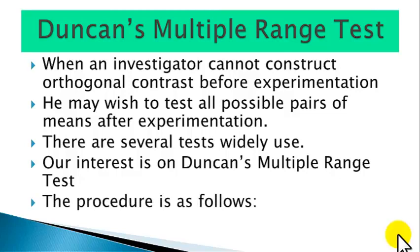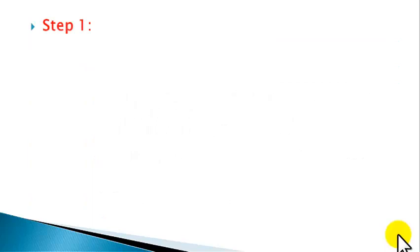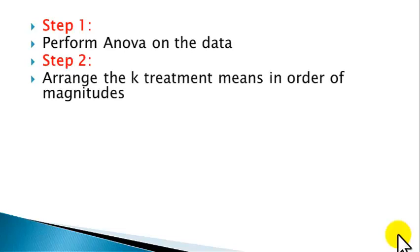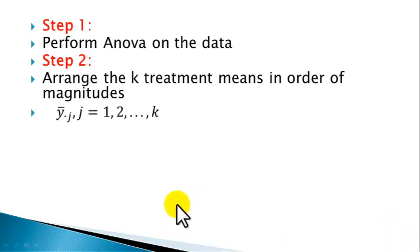The procedure is as follows. Step 1: Perform ANOVA on the data. Step 2: Arrange the treatment means in order of magnitude — that is, y-bar dot j for j equals 1 to k. We assume they are already in order of magnitude.